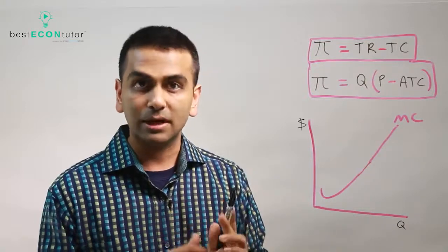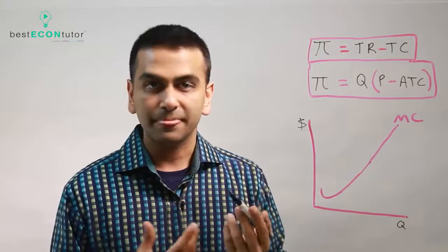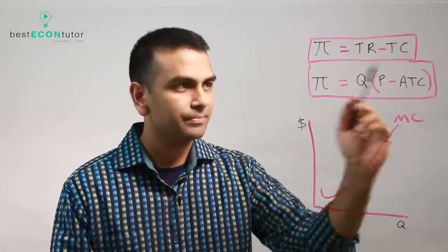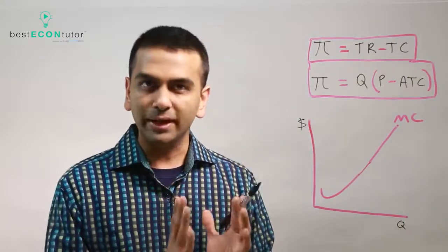So P minus ATC is your per unit profit times the quantity that you sell, that gives you your overall profit. That's a very useful interpretation. Notice it's not price minus MC. Price minus MC is how much you make for the very last item in profits, because that's what marginal is.